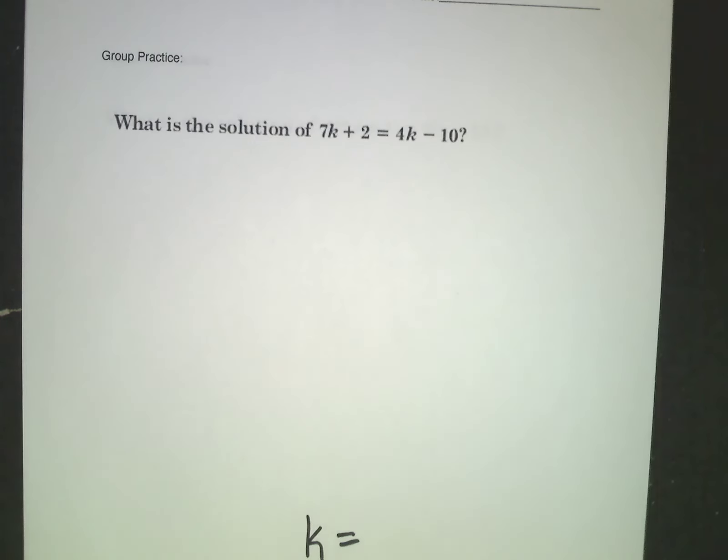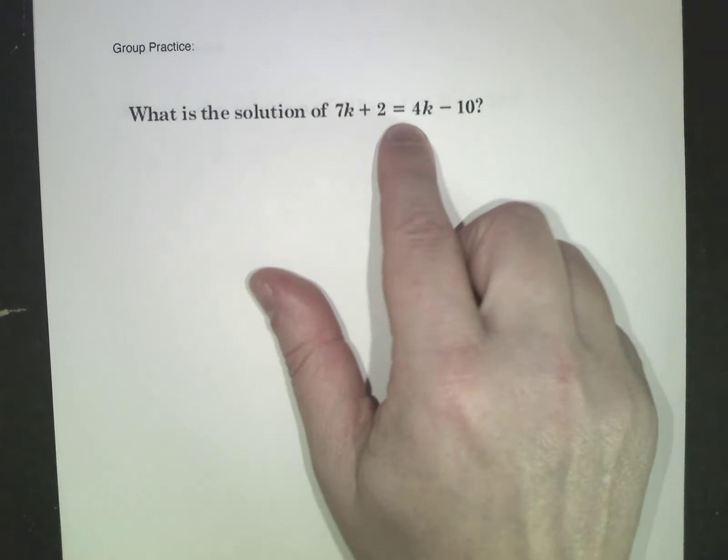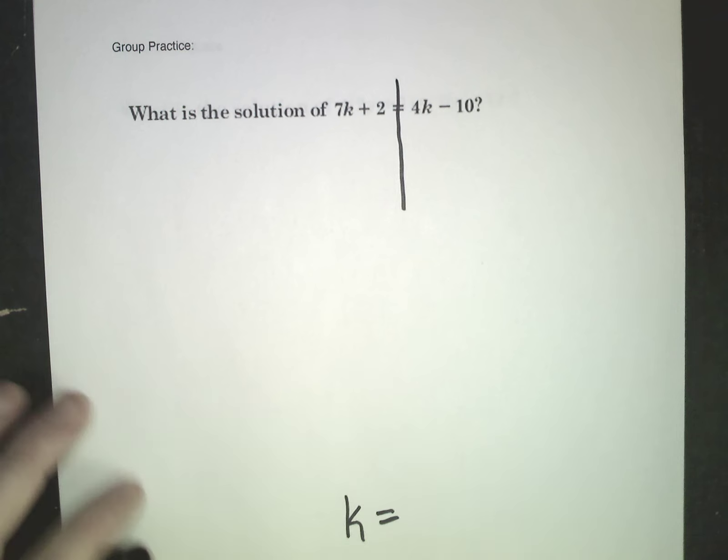So I look at this problem. First thing I notice is I have a k here, and I have a k here. Here's my equal sign, so I'm going to draw a little line through that so I know I've got to get k on one side.